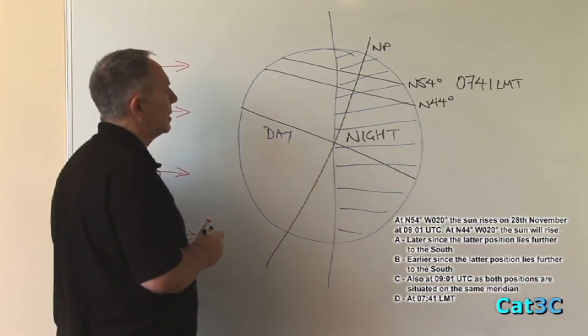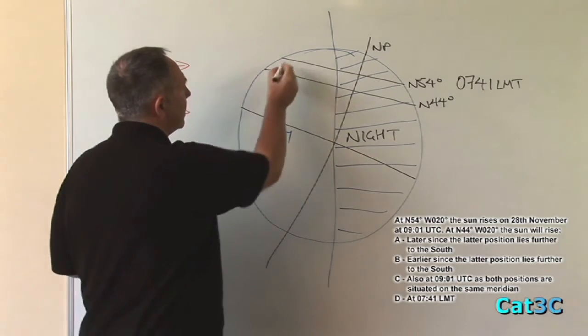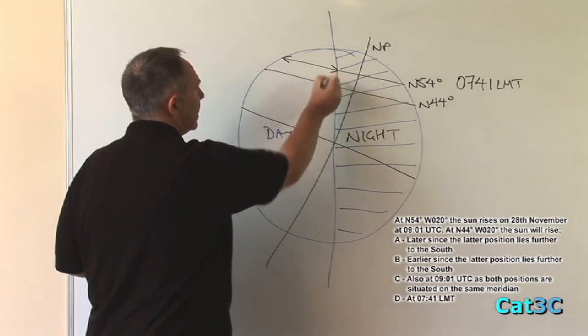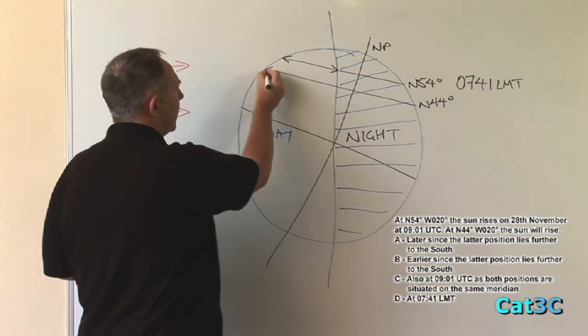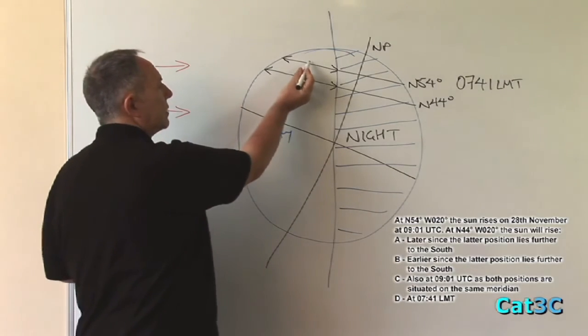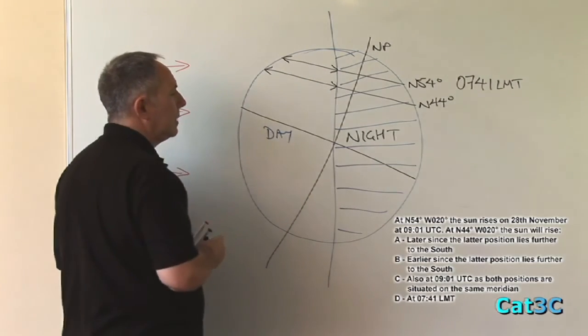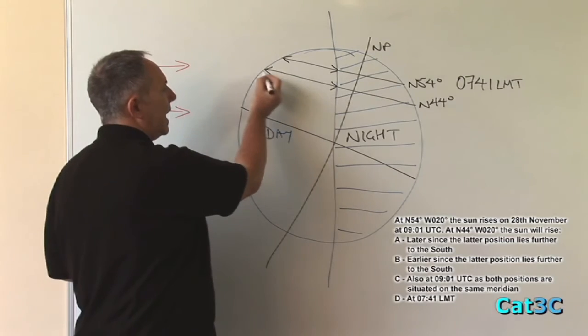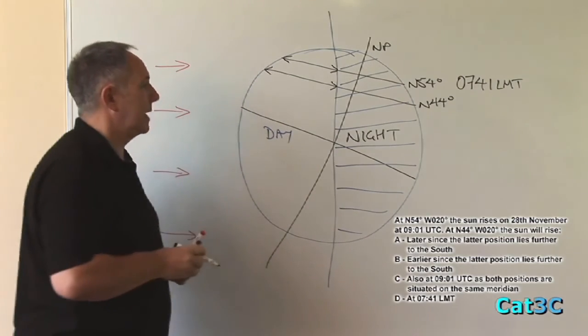We know that the time of sunrise from our previous calculation at north 54 is 0741 local mean time. Now, looking at these two lines, we can see that the length of daytime at north 54, when compared with the length of daytime at north 44, is considerably shorter, meaning that the length of daytime at north 44 is longer than at north 54.